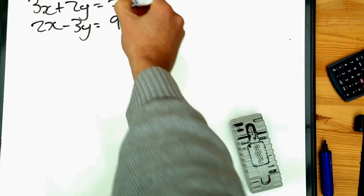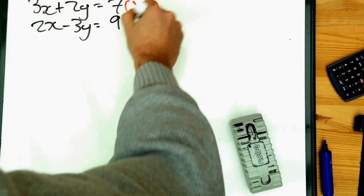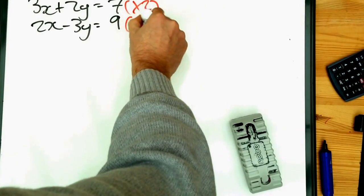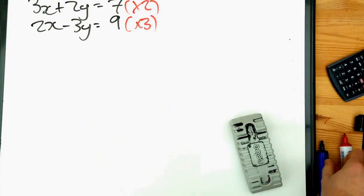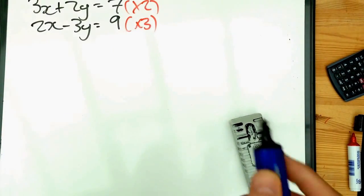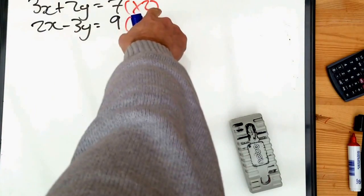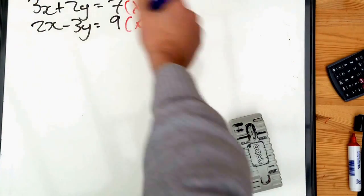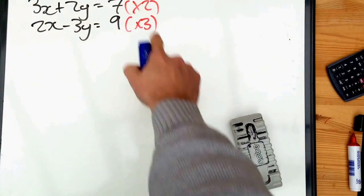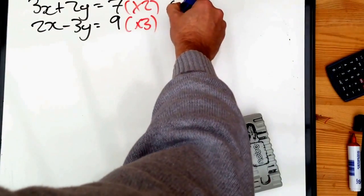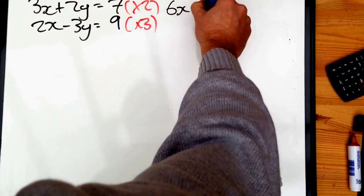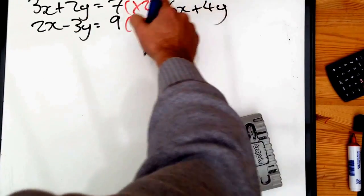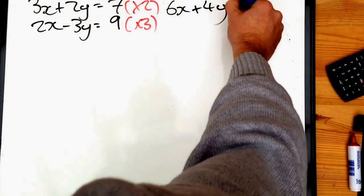If I times the top equation by two and the bottom equation by three, I should end up with six x's in both equations. But if I'm multiplying the top equation by two, everything needs to be multiplied by two. Two times three x is six x. Two times two y is four y. Two times seven is fourteen.